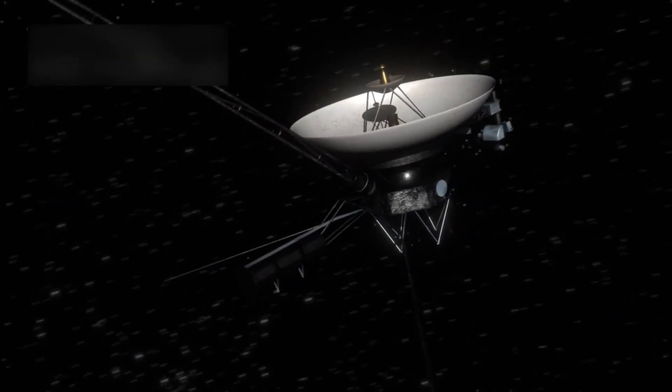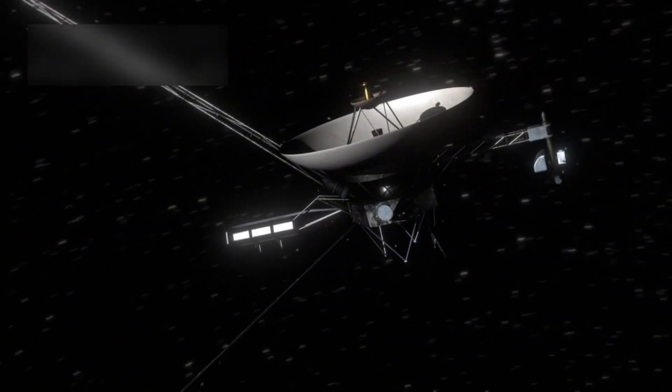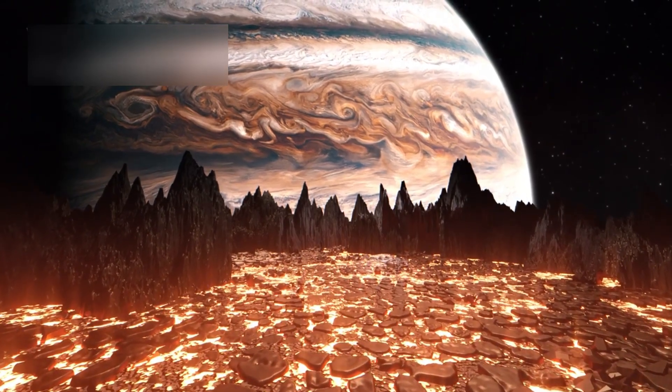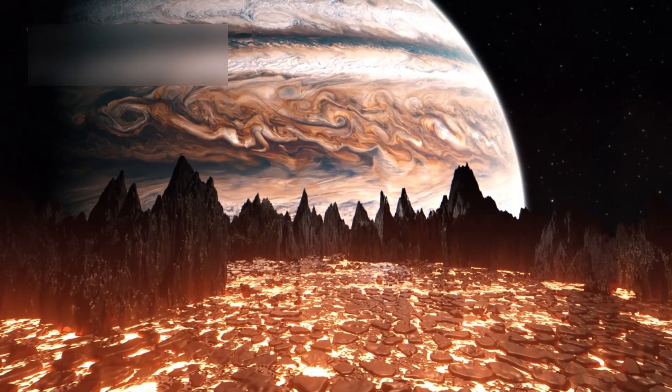Its close-up images of Jupiter's storms and Saturn's rings transformed how we see the outer solar system. It even discovered volcanic activity on Jupiter's moon Io, which was the first time active volcanoes were seen beyond Earth.